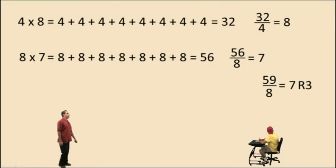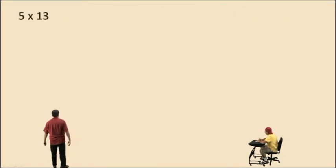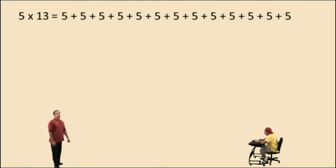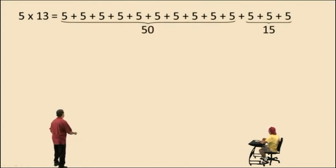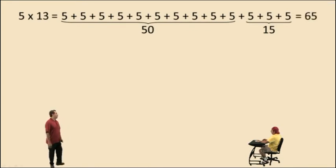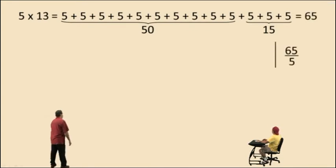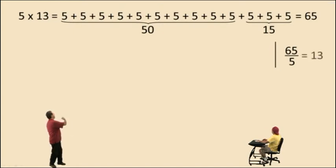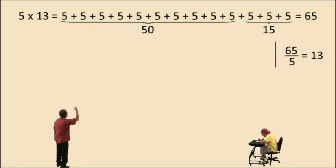Let's move on. 5 times 13: there are 13 of these 5's being added together — that's 50 plus 15, because 10 fives gives you 50 and 3 more 5's gives you 15. That's a total of 13 fives, and that equals 65. So 65 divided by 5: how many 5's go into 65? 13 of them — that's because 5 times 13 is 65.